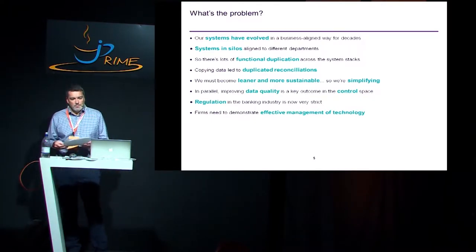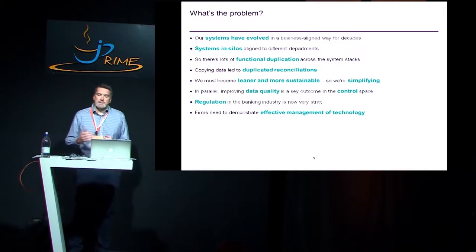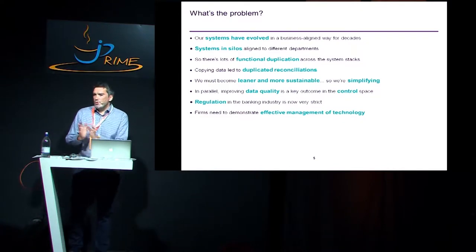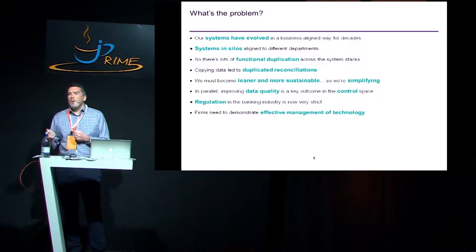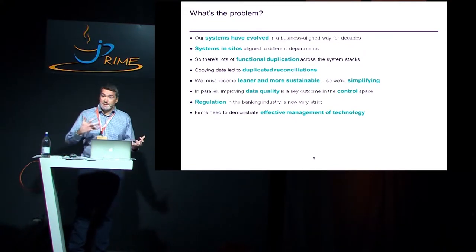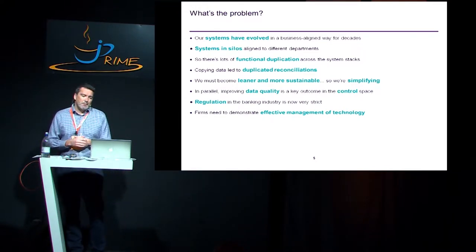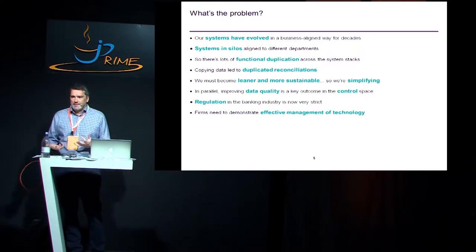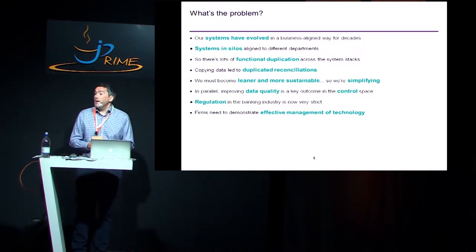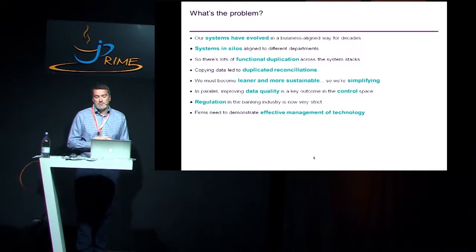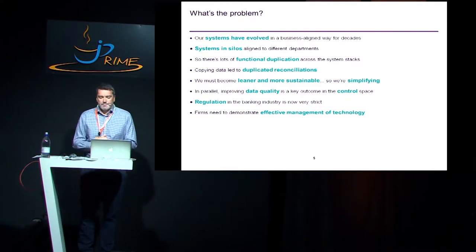To summarize: we've had an evolution over many years, and our systems tend to align towards these asset class stacks. They tend to align in terms of ability to respond to pressures that a department or asset class might place on the engineering mechanisms. So we end up with a lot of functional duplication, a lot of data duplication, and then checks between these systems to make sure data has been duplicated correctly — which makes lineage difficult and reporting more of a challenge. We know we need to become leaner and more sustainable, simplify these platforms, improve data quality, and meet regulatory challenges around control and lineage.